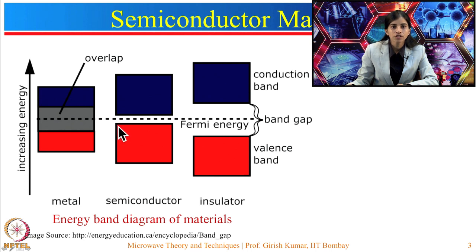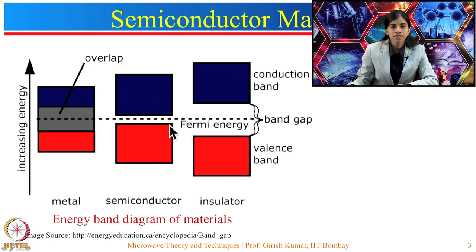The concentration of holes in any band is defined by the Fermi energy level. The Fermi level is an energy level which has a 50 percent probability of being occupied at any instant of time.